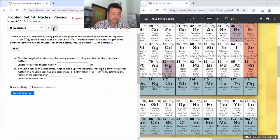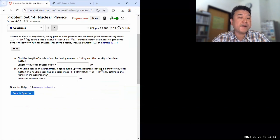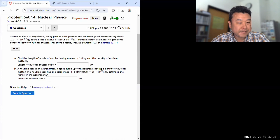All right, next question. Question two. So it says, atomic nucleus is very dense. All right, I think I might have to write some stuff down. So let me absorb that. Being packed with protons and neutrons, it's representing about this much, packed into that radius. Yeah, perform below estimates to gain some sense of scale for nuclear matter. Okay, find the length of a side of a cube, having a mass 1 kilogram, and the density of nuclear matter.